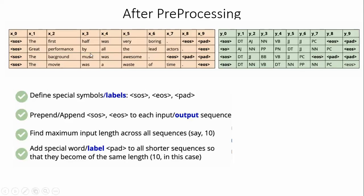This part represents words and this part represents labels. If anything is empty, it is going to be replaced with the three special symbols: SOS, EOS, and PAD. After applying the preprocessing in the algorithm, the output will look like this.